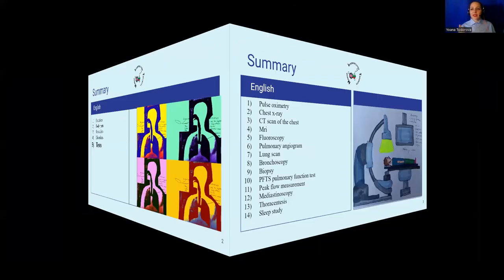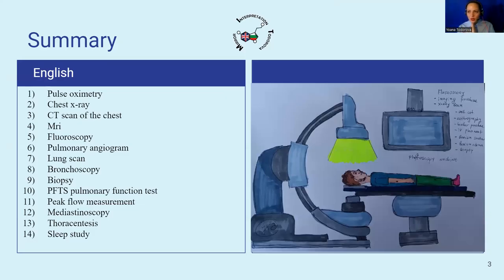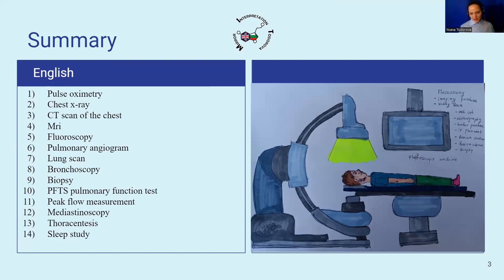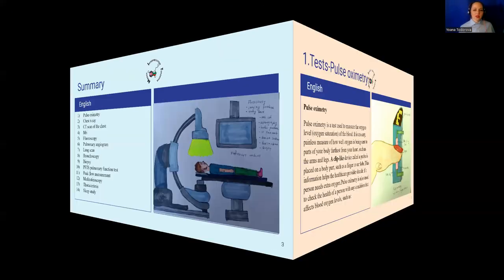The most common tests that you are going to interpret as a medical interpreter in a respiratory system include: pulse oximetry, chest x-ray, CT scan, MRI, fluoroscopy, pulmonary angiogram, lung scan, bronchoscopy, biopsy, pulmonary function test, peak flow measurement, mediastinoscopy, thoracentesis, and sleep study.